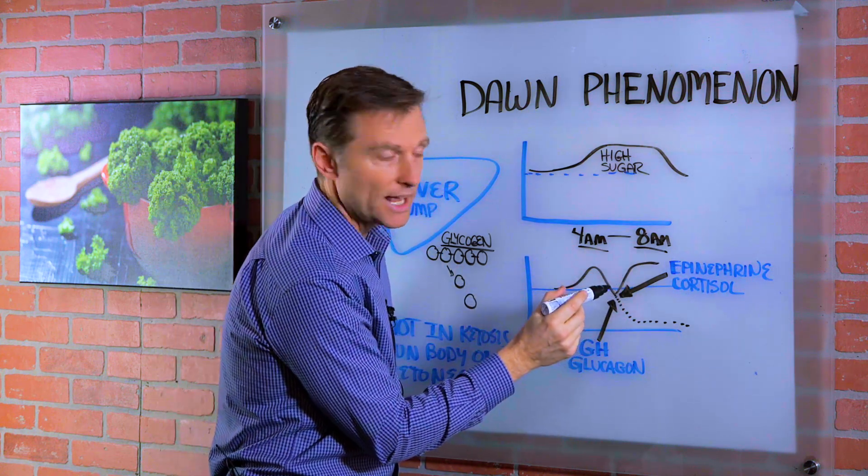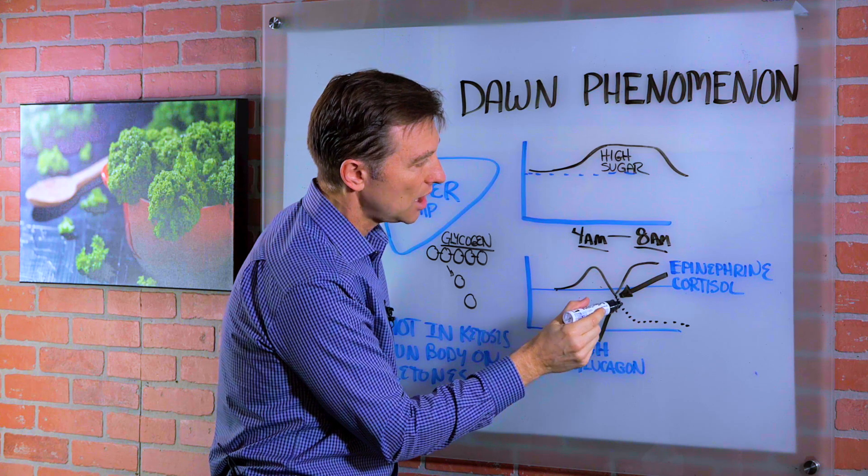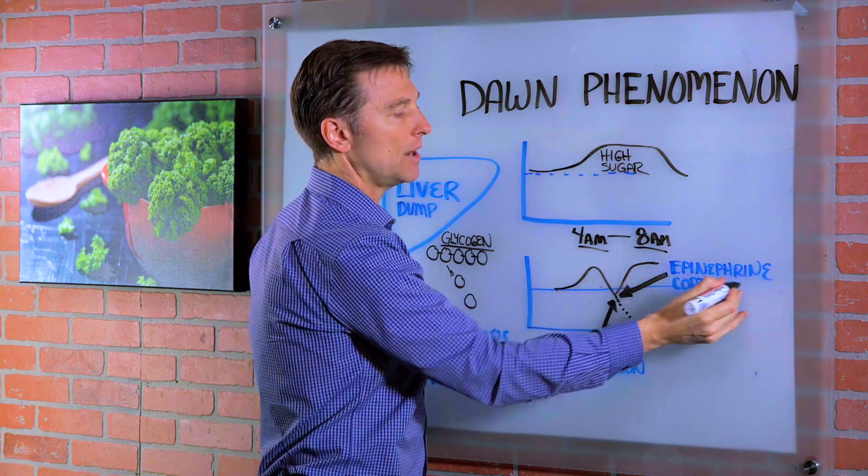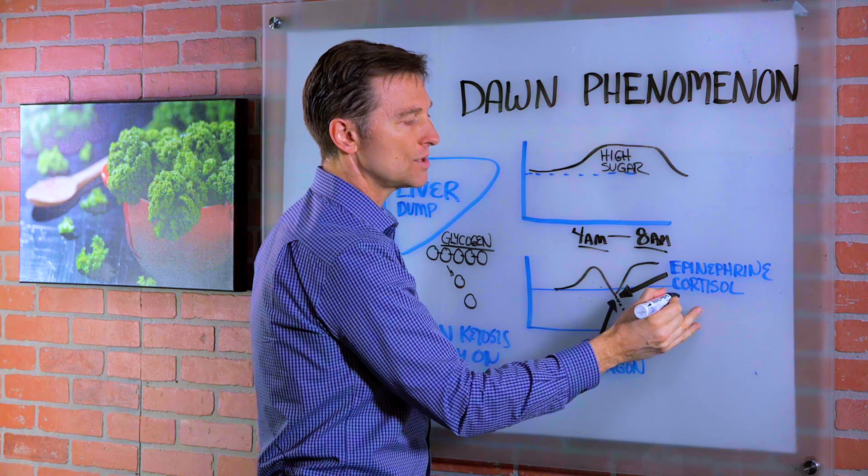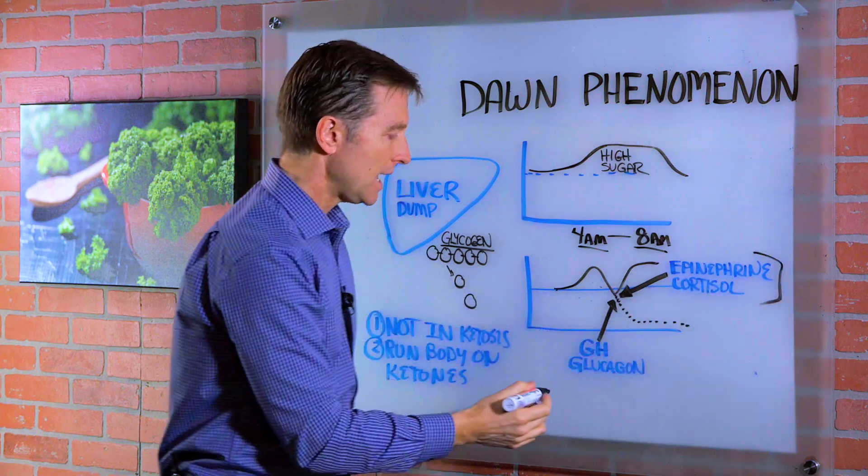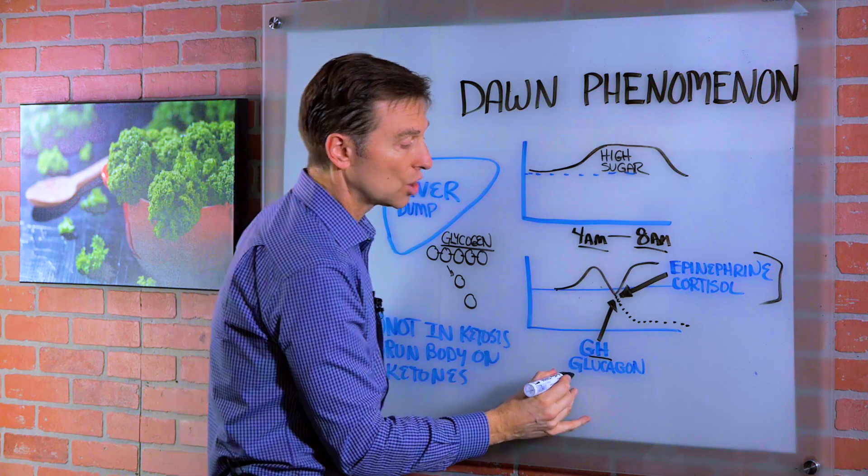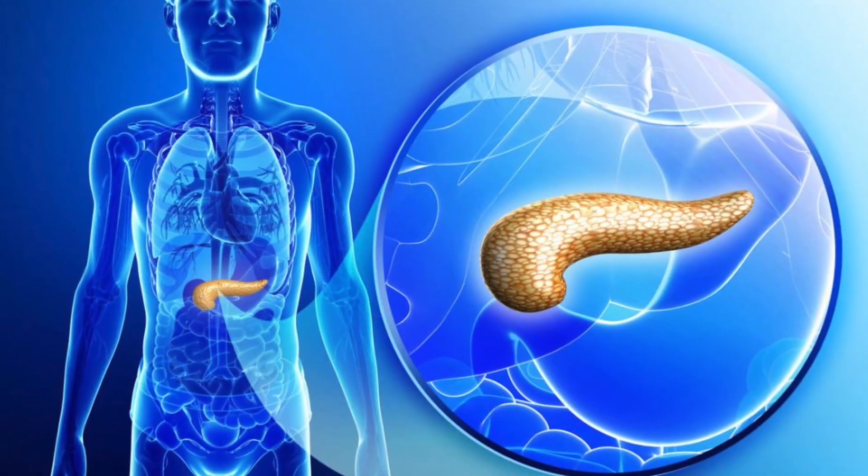There's a certain mechanism that happens when your blood sugar goes a little too low. There's a counter effect from a couple other hormones, epinephrine and cortisol. These are from the adrenals and growth hormone and another hormone called glucagon that originates from the pancreas.